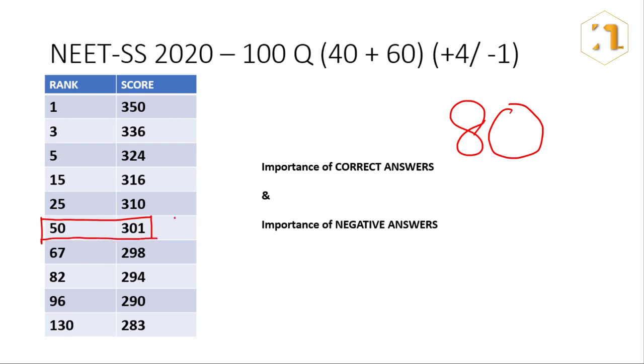Now this trend is same for 2019 as well and it's likely to hold up. So 80 is your magic number. So the importance of correct answer is that - you need maximum correct answers and the magic number is 80. At the same time, negative answers are also very important. Imagine you get 80 correct, you get 12 wrong, and then leave the other 8 - your score is obviously going to be more than 300 and your rank is going to go up.